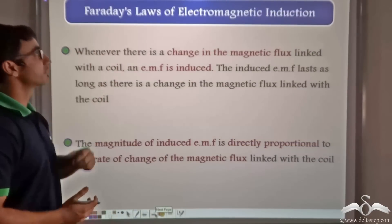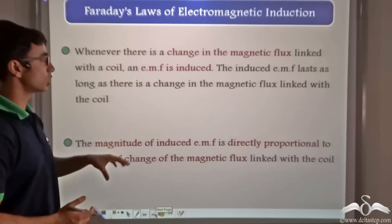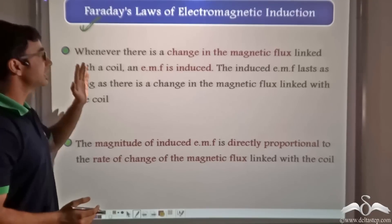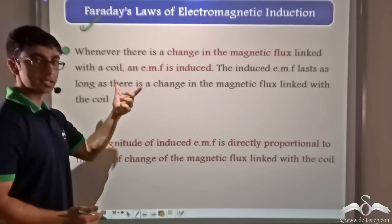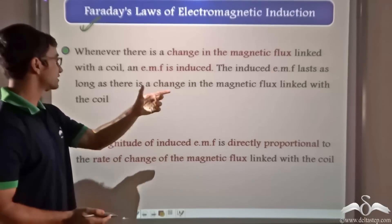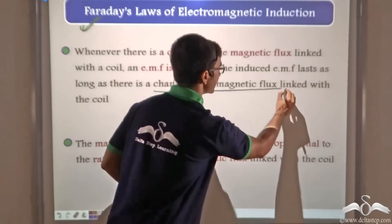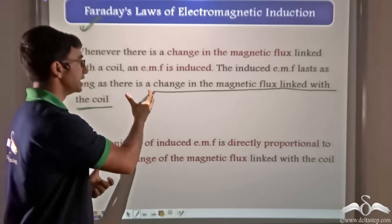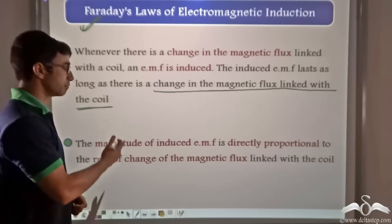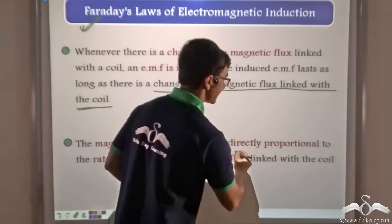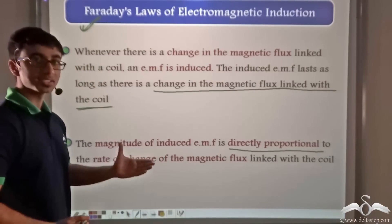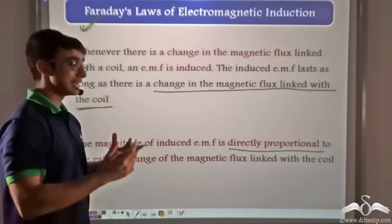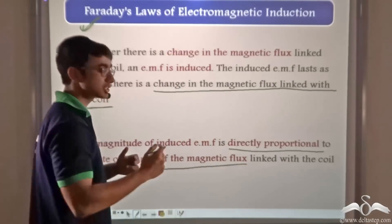Faraday, after studying electromagnetic induction, postulated these laws, known as Faraday's laws of electromagnetic induction. The first law states that whenever there is a change in the magnetic flux linked with a coil, an EMF is induced, and the induced EMF lasts as long as there is a change in magnetic flux. The second law states that the magnitude of the induced EMF is directly proportional to the rate of change of magnetic flux linked with the coil — greater the rate of change, more the induced EMF; less the rate of change, less the EMF.